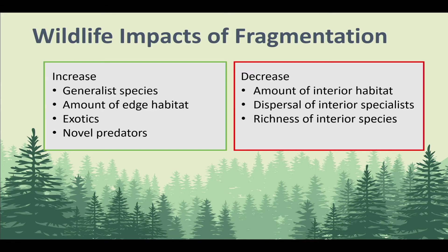General wildlife impacts of fragmentation — to take you back to your first wildlife ecology class: as fragmentation increases, you increase the number of generalist species and the amount of edge habitat on the landscape; you also increase the number of exotic species and novel predators within interior habitats. In contrast, you decrease the amount of interior habitat, decrease dispersal ability for many interior forest specialists, and decrease the richness of interior species. As patches get smaller you generally have fewer species able to survive in those patches.